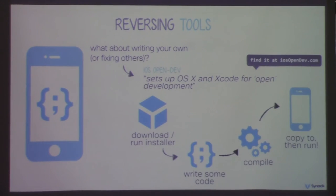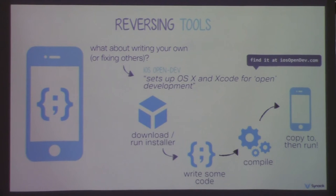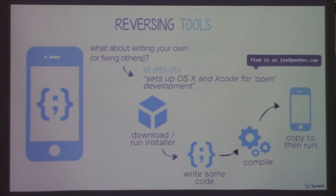Sometimes tools are broken — they won't run on iOS 7 or iOS 8 — or you might want to write your own. The solution is iOS OpenDev. Back in the day, if you wanted to write a binary and run it on a jailbroken device, it was a huge pain — code signing, entitlements, all that. iOS OpenDev handles all of this automatically. You install it, it sets up Xcode so you can create binaries or apps to run on a jailbroken device. Write your code in Objective-C or C, click compile, copy it over via SCP, and iOS OpenDev has taken care of all the code signing and entitlements.